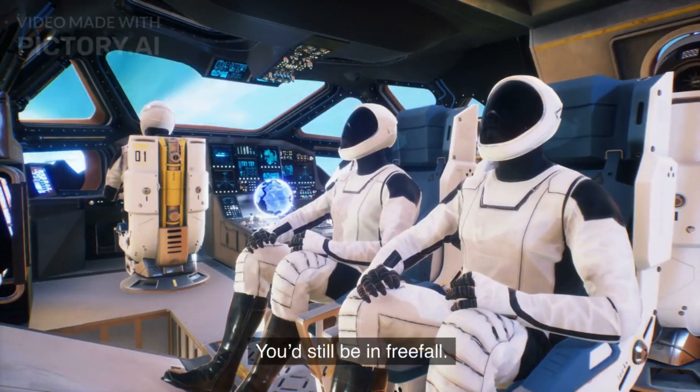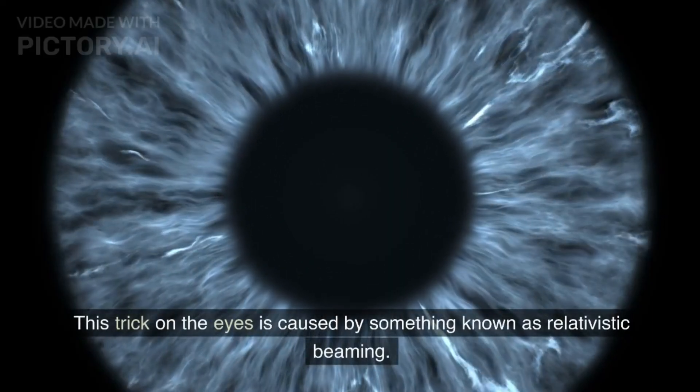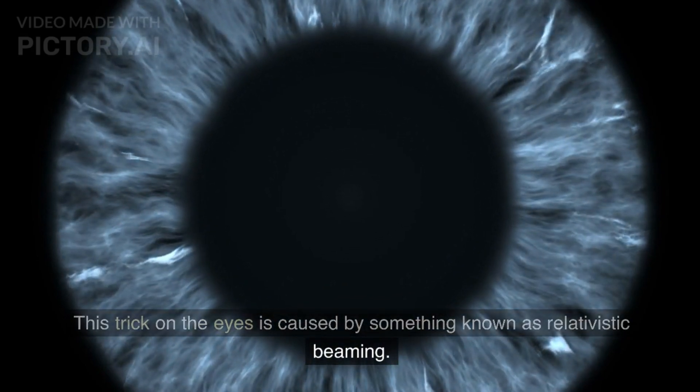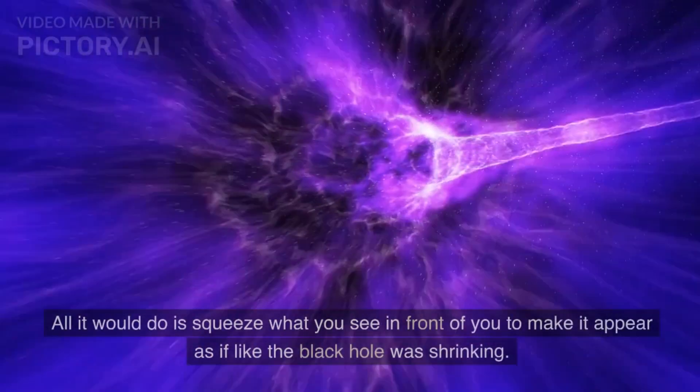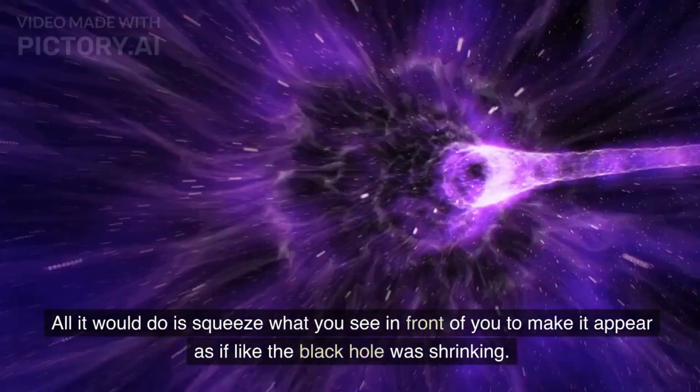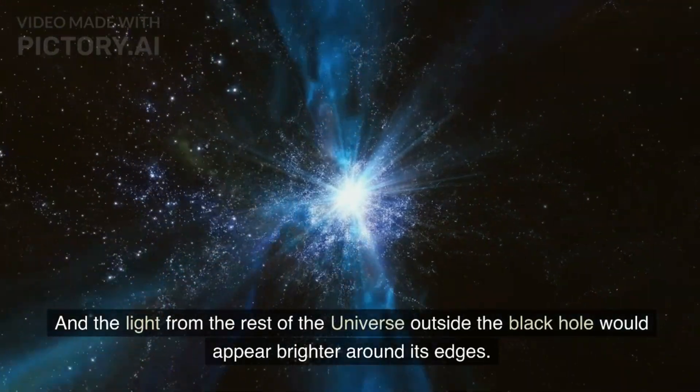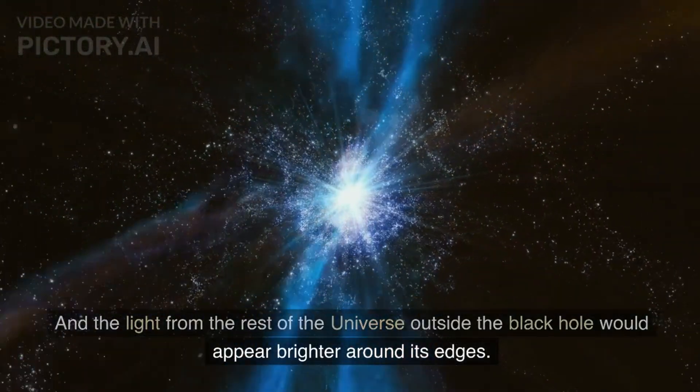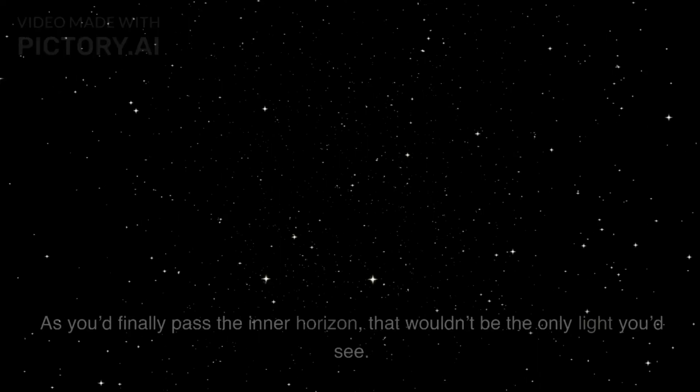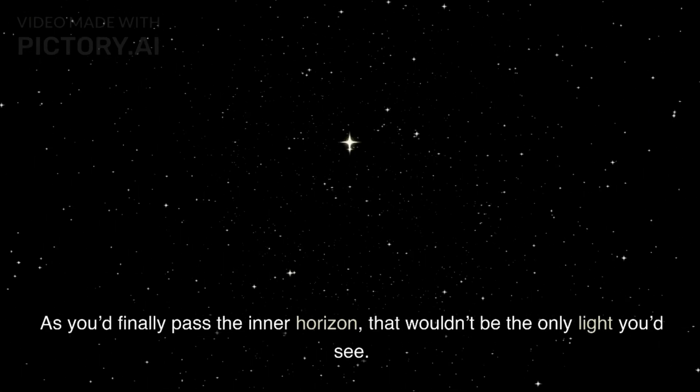This trick on the eyes is caused by something known as relativistic beaming. All it would do is squeeze what you see in front of you to make it appear as if the black hole was shrinking, and the light from the rest of the universe outside the black hole would appear brighter around its edges.